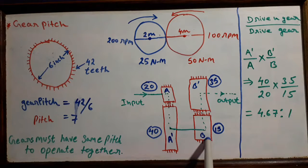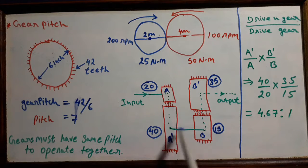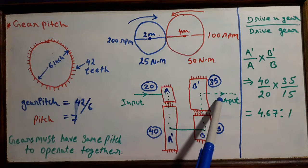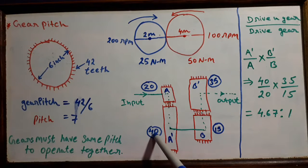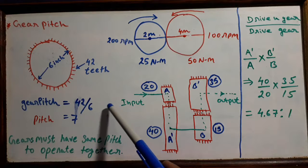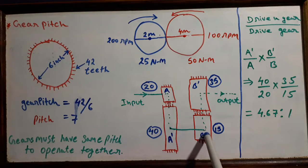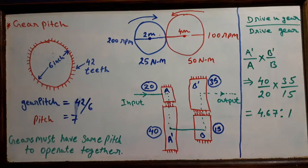B is drive gear for B dash, and B and A dash are rotating at the same speed. B has 15 teeth, B dash has 35 teeth, A has 20 teeth, and A dash has 40 teeth. The input goes to A, then A dash, then B, then B dash, and then output is taken to the shaft.